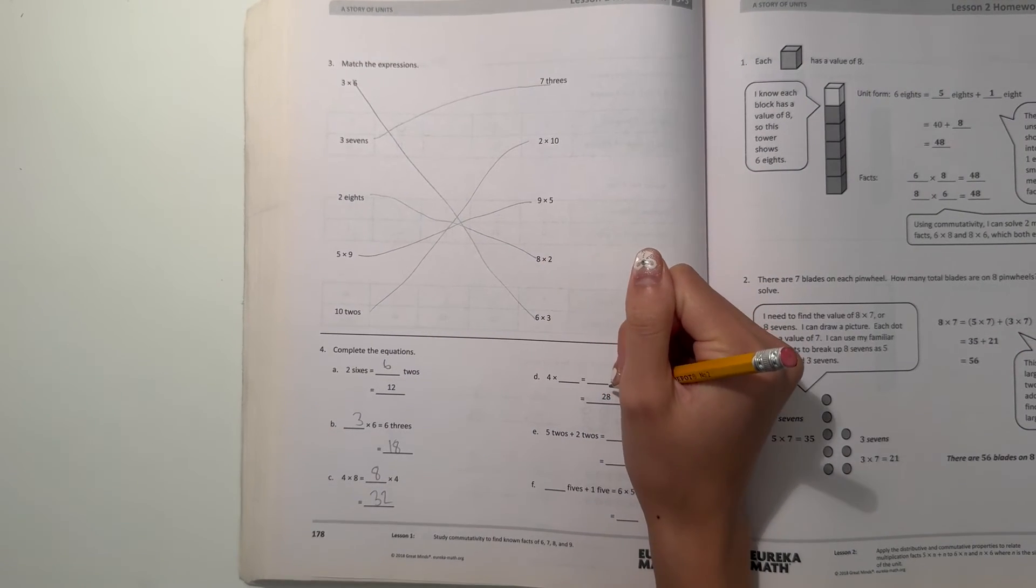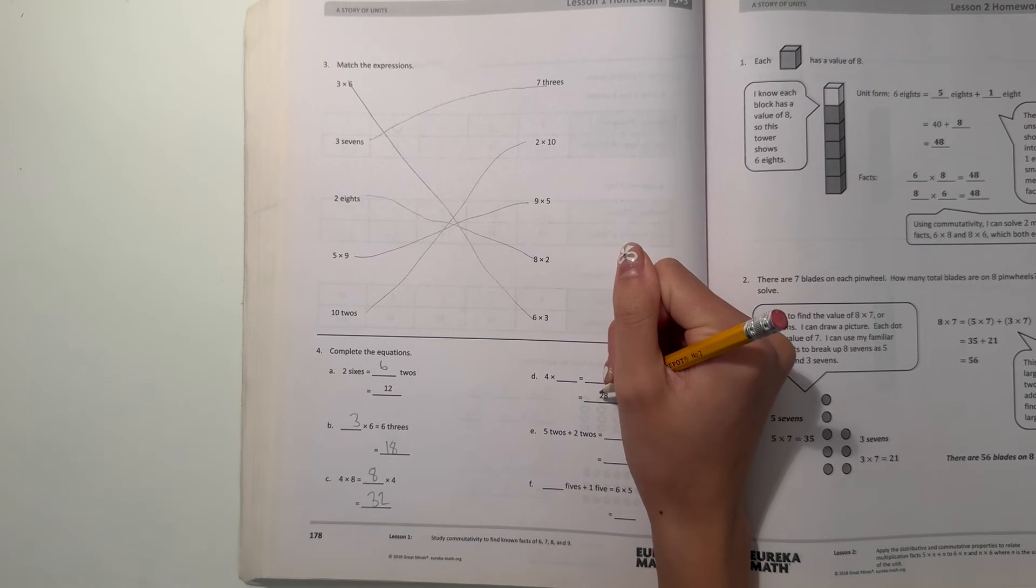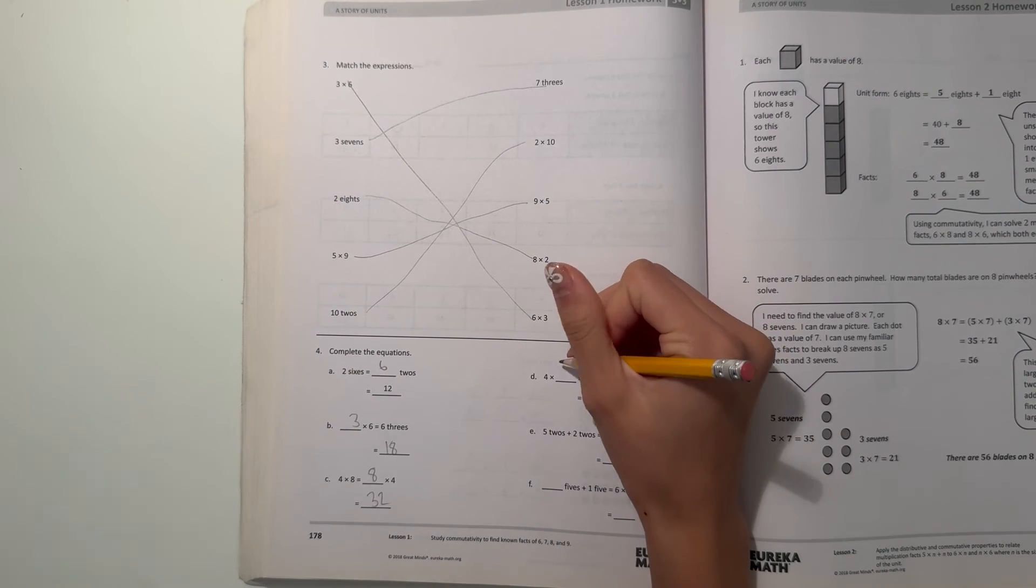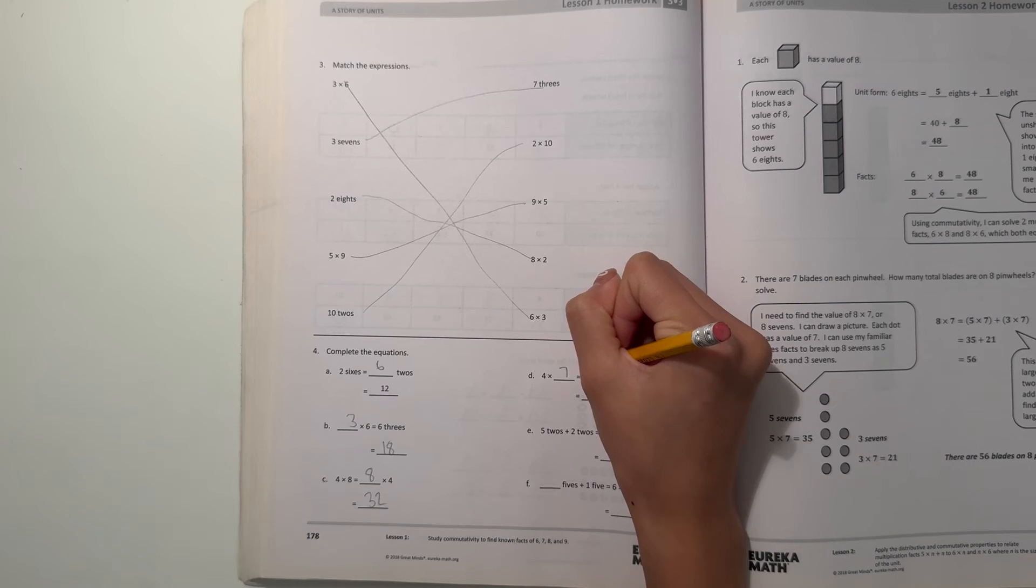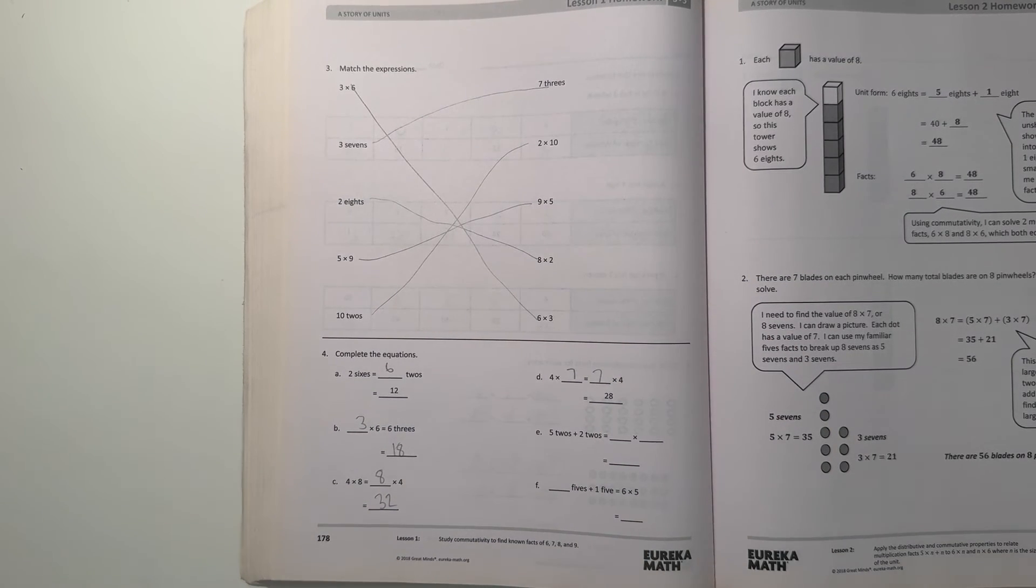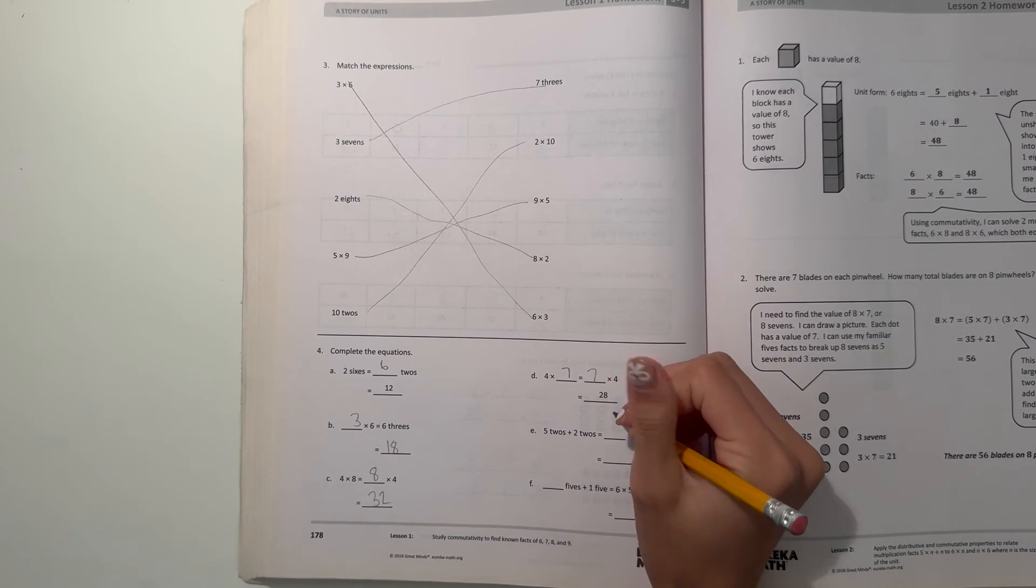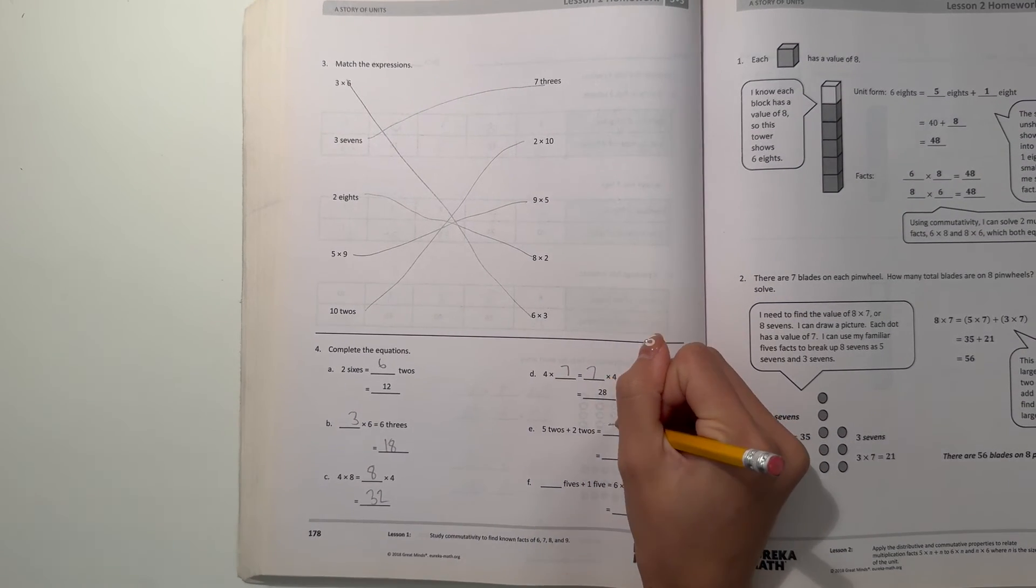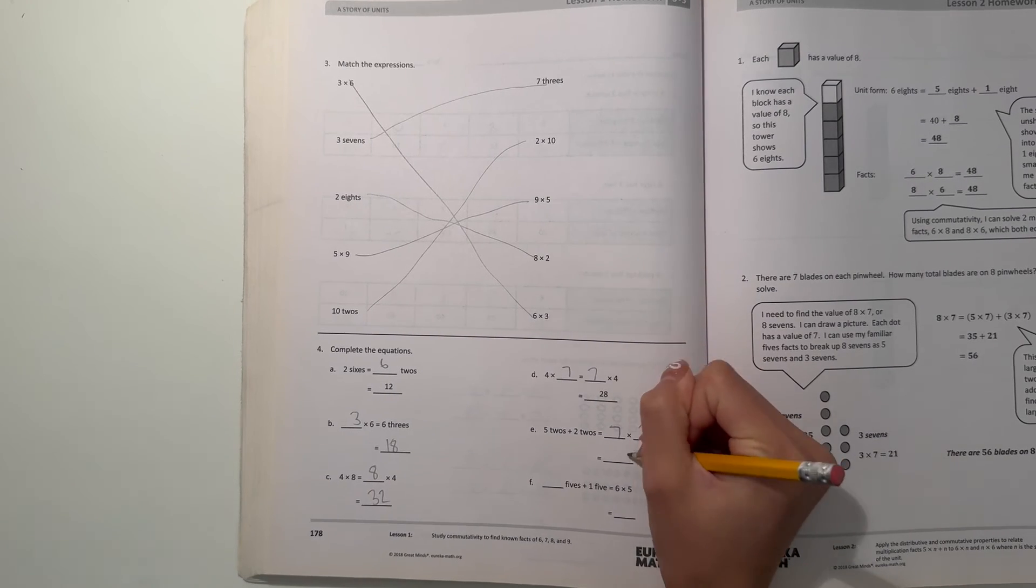And D, well, over here is 28. And we know 4 times 7 is 28, which means 4 times 7 equals 7 times 4, which equals 28. And now 5 2's plus 2 2's. Well, 5 plus 2 is 7. So that would be 7 2's. And 7 2's is 7 times 2, which is 14.